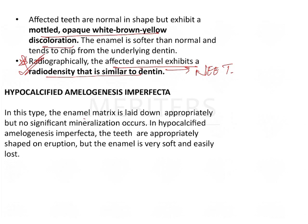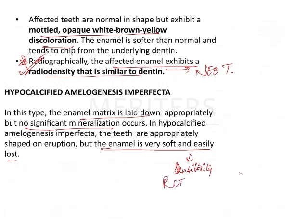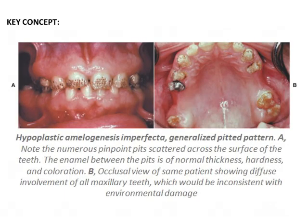In hypocalcified amelogenesis imperfecta, the matrix is laid down but there is no significant mineralization. The teeth are appropriately shaped on eruption, but the enamel is very soft and easily lost. As a result, there is sensitivity and in many cases the patient would require root canal treatment. This is what is meant by pinpoint depressions.